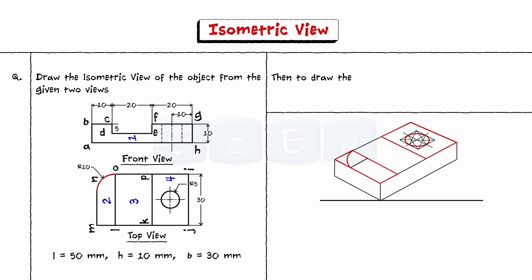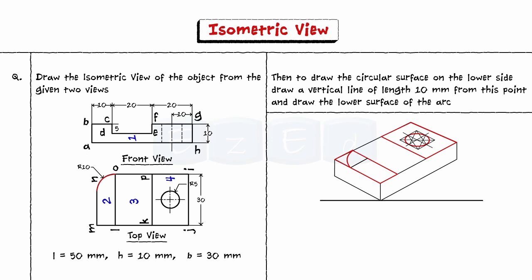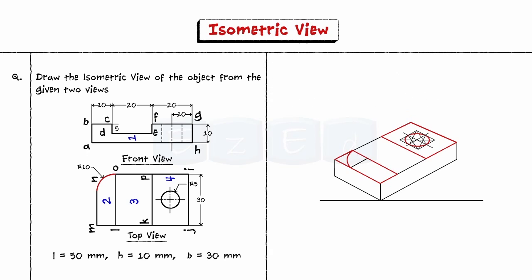Then to draw the circular surface on the lower side draw a vertical line of length 10mm from this point and draw the lower surface of the arc. Now draw a vertical line of 10mm length from this center and draw the fillet on the lower face as shown. Join the two arcs with common tangents and remove the excess portion.